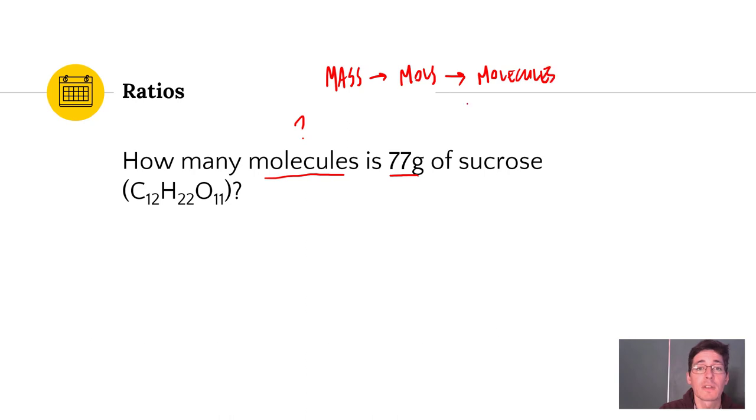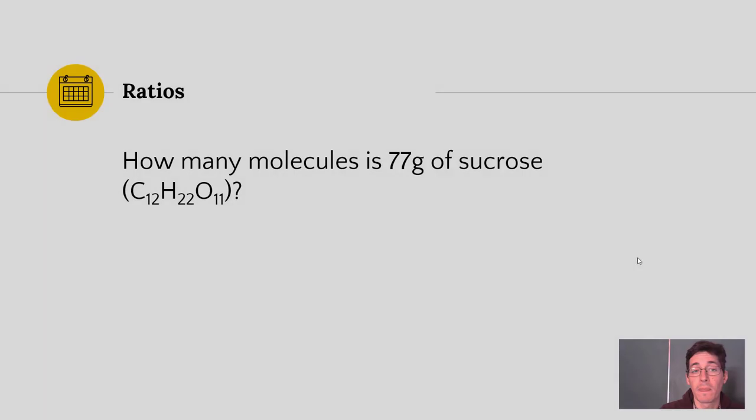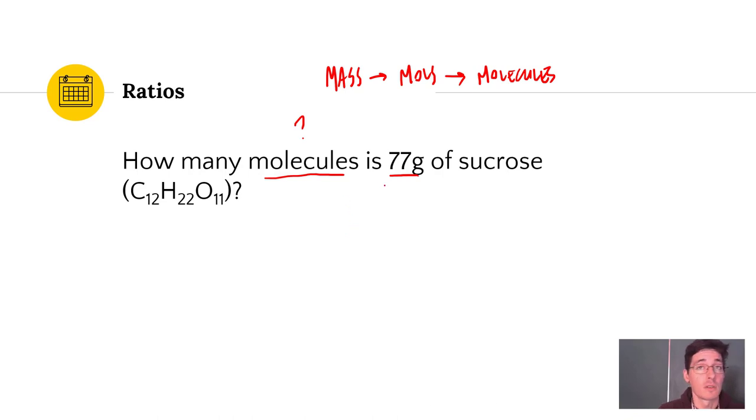Remember, molecules and moles are not the same thing. And you have to go in order. I must go from a mass to moles first and then go over to my particles. So we're going to set up a ratio to do this. This is called dimensional analysis, but essentially we're using ratios with conversion factors to get from one unit to the other.